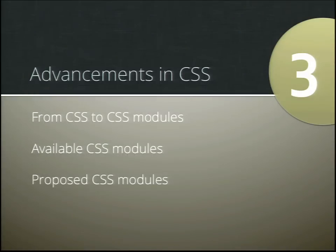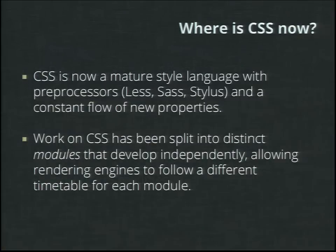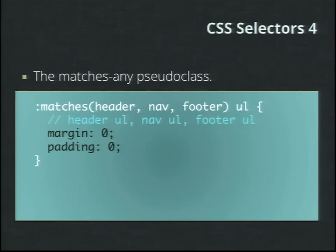Let me talk about what sorts of advancements in CSS we've been seeing. I'm going to delve into mostly things that have happened in the last six months or so. CSS is constantly undergoing a lot of change, and as a result it has been split into distinct modules that are being developed independently, allowing rendering engines to follow their own schedule when it comes to these features. To start, I'd like to jump right in and talk about CSS selectors.